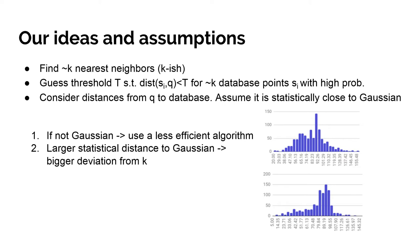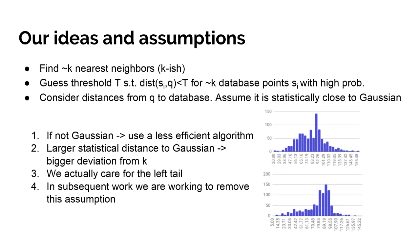If the Gaussian assumption does not hold, we resort to a less efficient way of guessing the threshold T. What this means is that as the statistical distance to Gaussian distribution grows, the T we guess will yield a number of neighbors farther away from K — but as long as it's not too far, it still gives similar classification rates. Our analysis is not tight, and it is much more important that the left tail of the distribution be close to Gaussian. Empirically, the databases we checked did in fact have distances close enough to Gaussian, as shown by two example distance histograms for random query points on the breast tumor database.